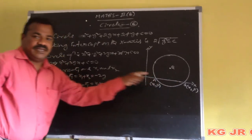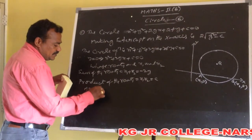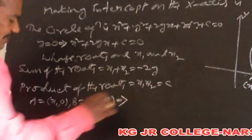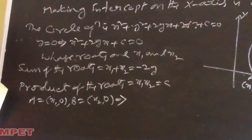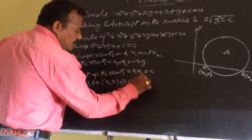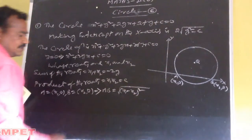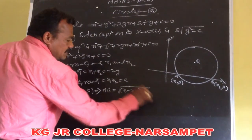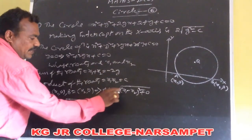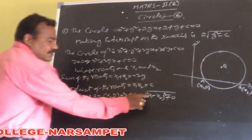Now we have to find out the distance between a and b. The coordinate of a is (x1, 0) and b is (x2, 0). The distance between these two points is the intercept the circle makes on the x-axis. That is, AB equals under root of (x1 minus x2) whole square.